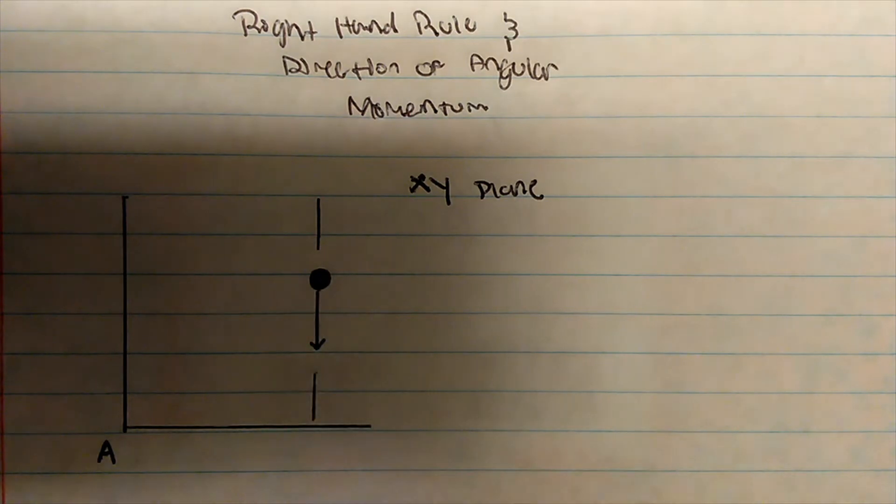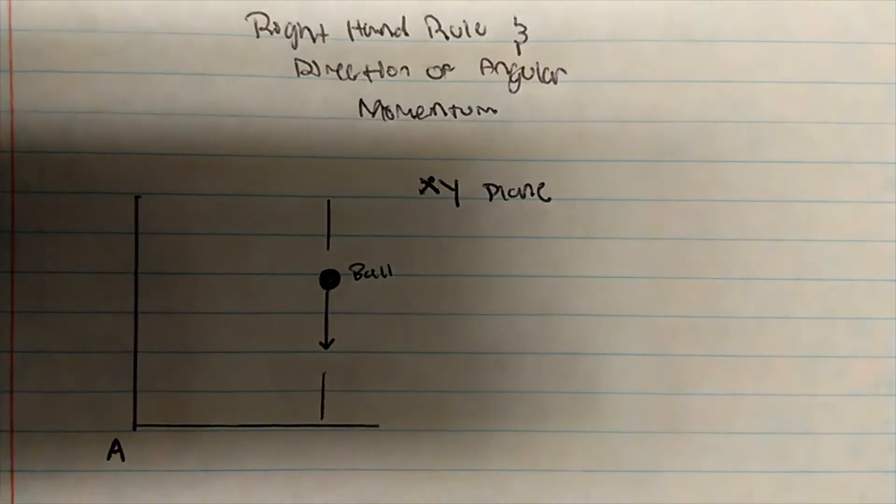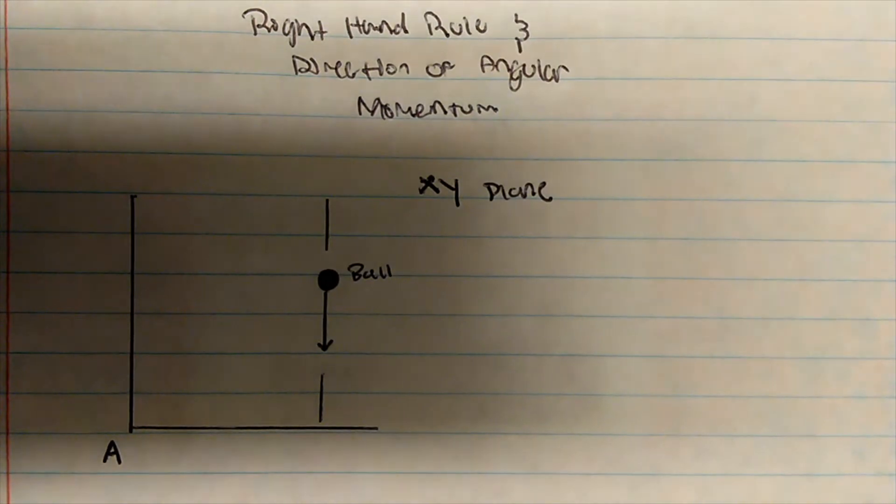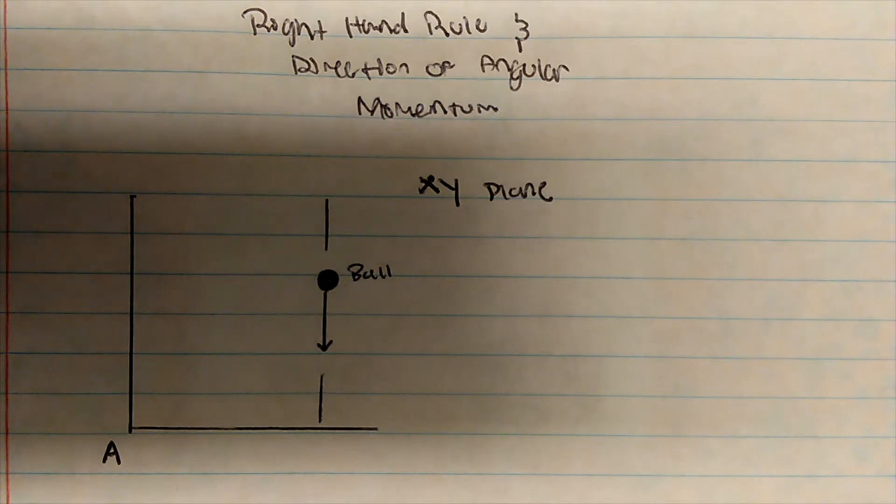Well, suppose we have this problem here. We have this is a ball, it's falling at some sort of velocity, some sort of momentum. And with respect to location A, we want to figure out what is the angular momentum.